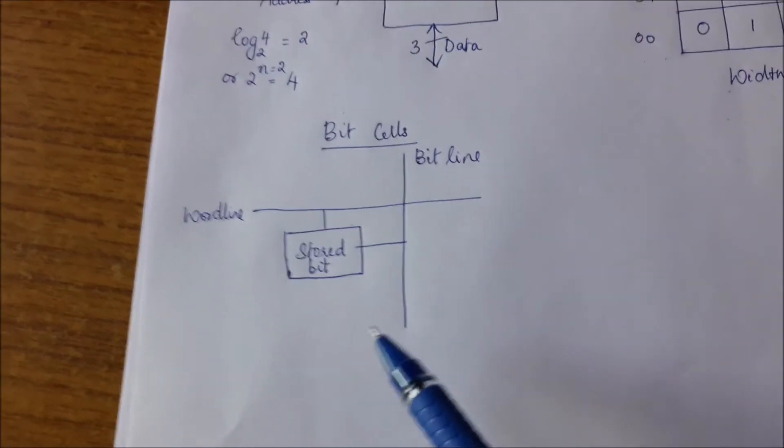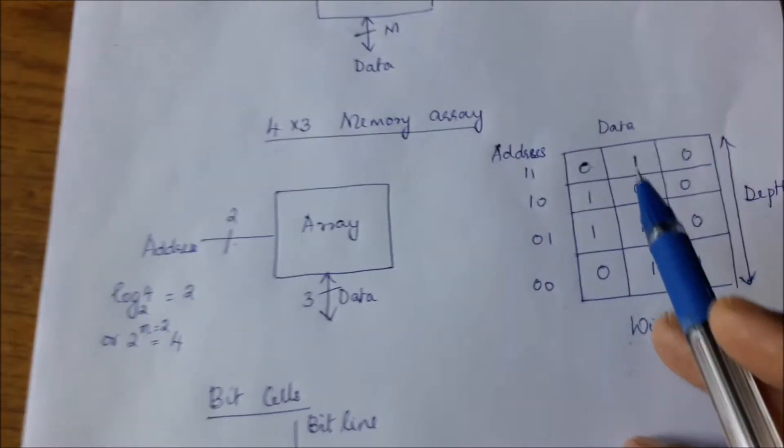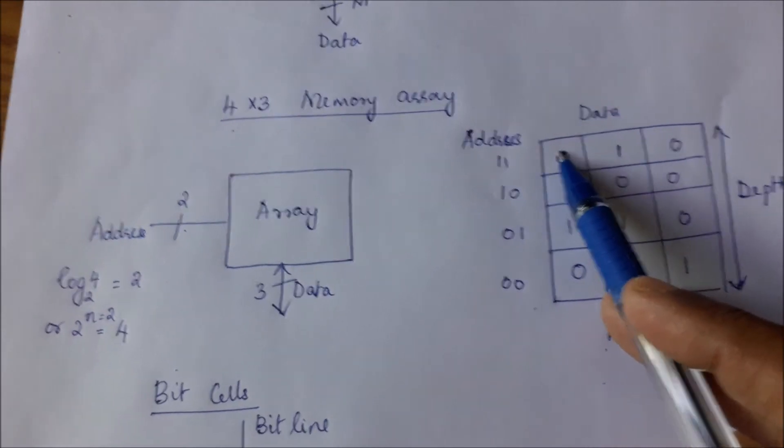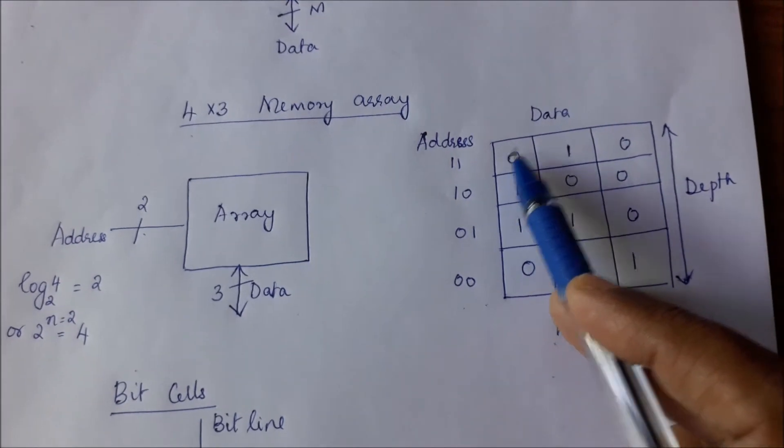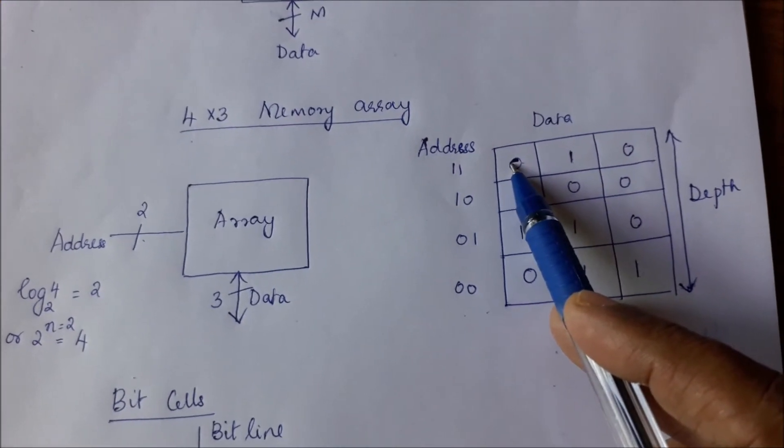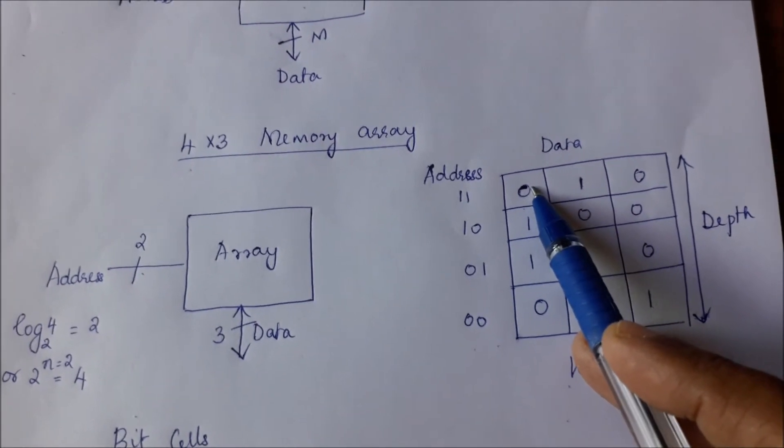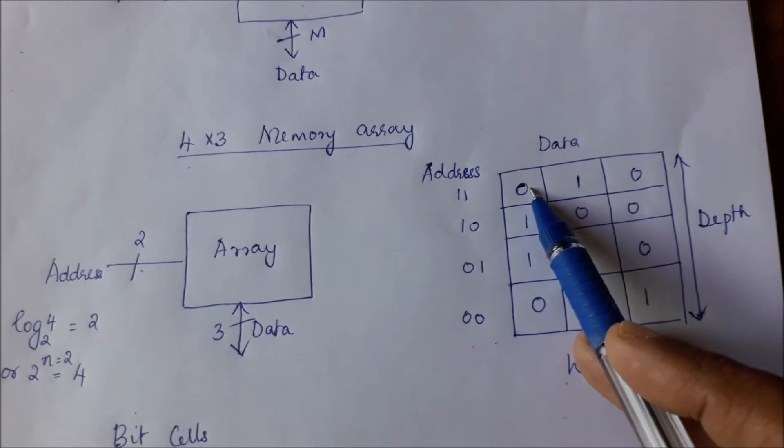Now if you see how the bit cells are organized, suppose I want to access each of these bit cells, I have to do it in a particular way. I have to enable this word. Now what is the meaning of enabling this word? I should allow the word to be written or I should be able to read it.